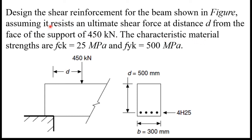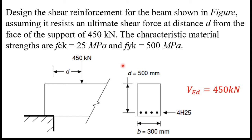The characteristic material strengths are given as fck and fyk. From the beam cross-section, d is marked as 500 millimeters and width as 300 millimeters. They have provided 4H25 bars, which are T25 bars with a diameter of 25 millimeters. The shear force at d is 450 kilonewtons, which is our VEd value.